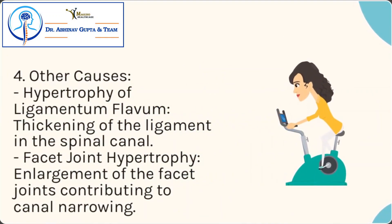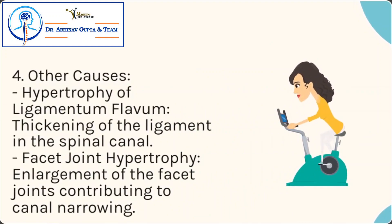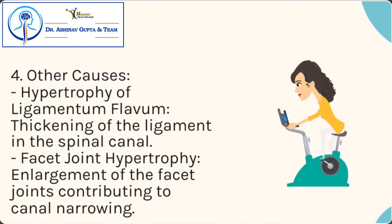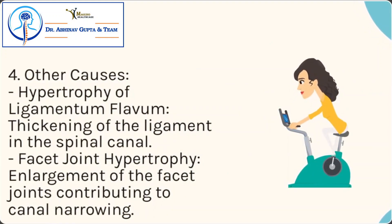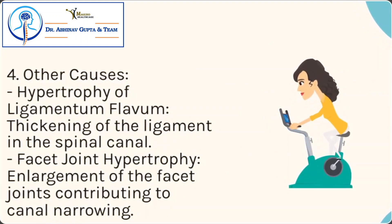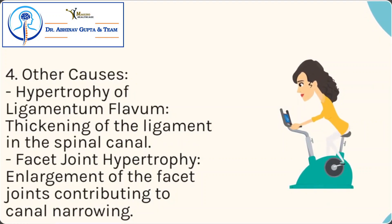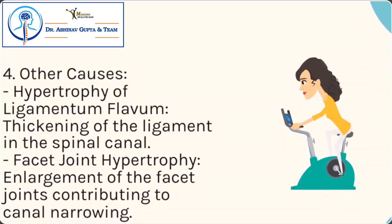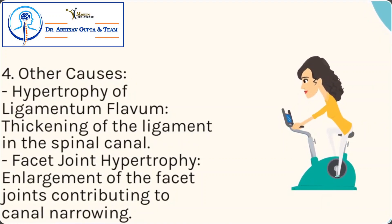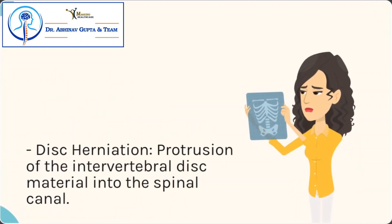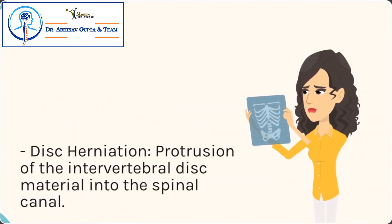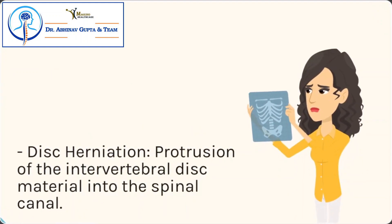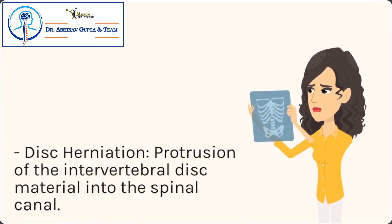Other causes include Hypertrophy of Ligamentum Flavum — thickening of the ligament in the spinal canal — and Facet Joint Hypertrophy, which is enlargement of the facet joints contributing to canal narrowing. Disc herniation involves protrusion of intervertebral disc material into the spinal canal.